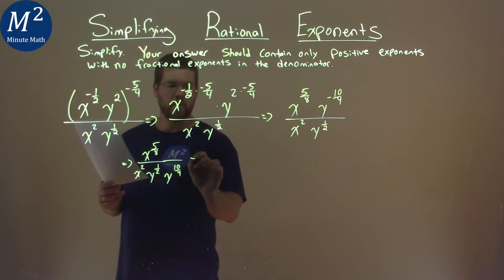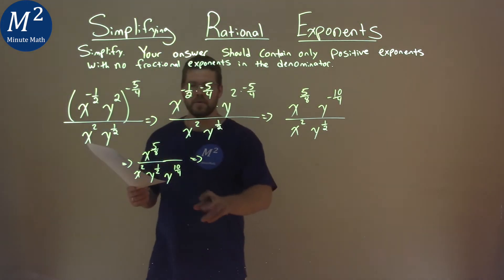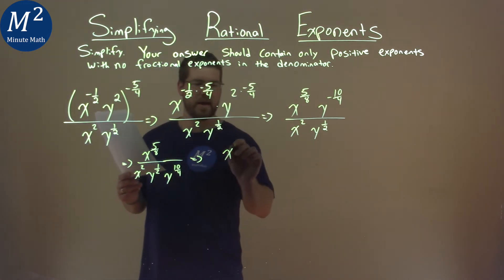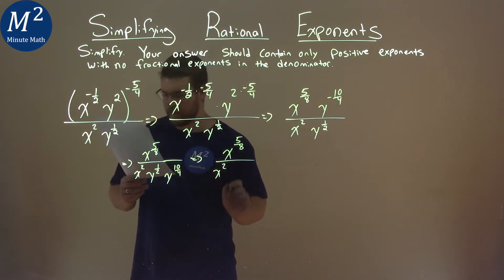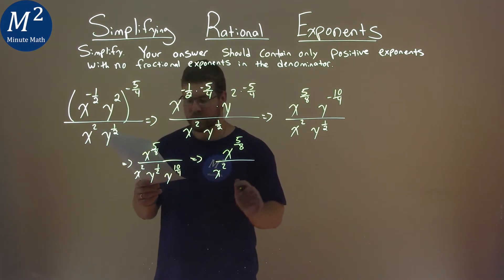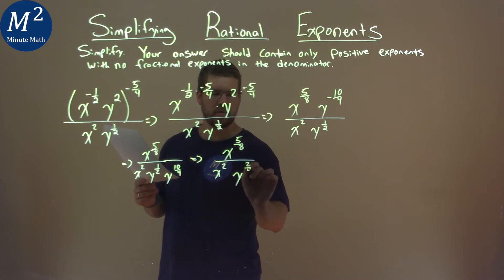Okay. Well, when we know about our rules, when we have the same base, we add the exponents. So, again, x to the five-eighths stays in the numerator, we have x squared in the denominator still. We want to add the exponents here, so we have y, and we have the same base, so one-half is a two-fourths plus a ten-fourths, like so.